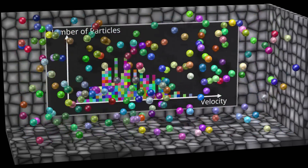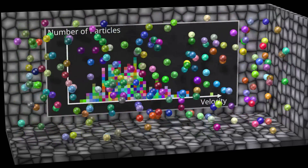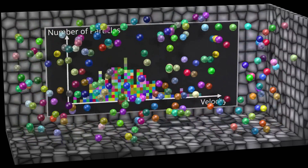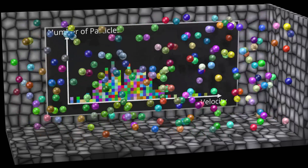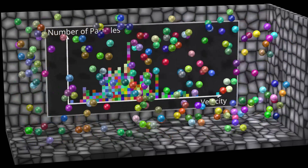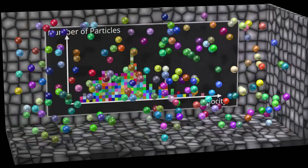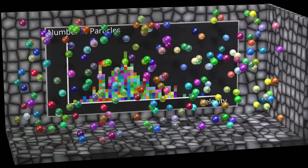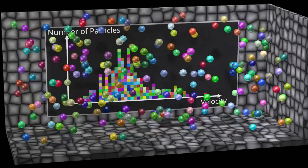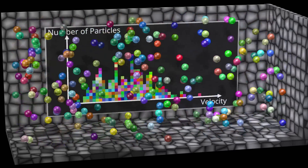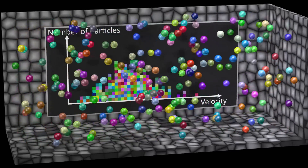In the graph, the velocity of each particle is rounded to the appropriate number of digits, so that all the squares neatly fit into columns. This system quickly reaches what we call thermodynamic equilibrium, and the graph for the velocity distribution ends up looking as shown. A system is in thermodynamic equilibrium when the entropy of the system has reached its maximum possible value, given the constraints of the system.